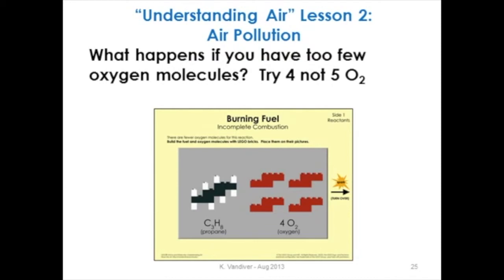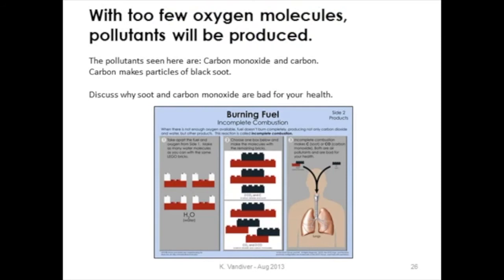Now moving to lesson two in Understanding Air, where we focus on air pollution itself. Kids can see how this happens if you start with propane again — build your propane molecule, lay it on the mat, put the four oxygen molecules on the mat, and react them. If you take your atoms and put them together, you'll first produce water. Then you have a choice: some teams might produce carbon dioxide and soot, where carbon gets stuck together; other teams might get the products including carbon monoxide.